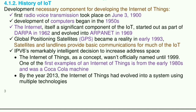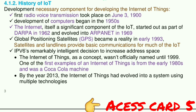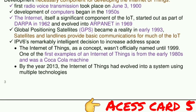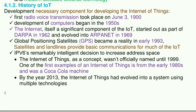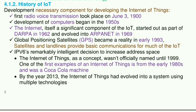History of IoT: Necessary components for developing the Internet of Things. The first radio voice transmission took place on June 3, 1900. Development of computers began in the 1950s. The internet, itself a significant component of IoT, started out as part of DARPA in 1962 and evolved into ARPANET in 1969. Global Positioning Satellites, GPS, became a reality in early 1993. Satellites and landlines provide basic communications for much of IoT. IPv6's decision to increase address space was remarkably intelligent. The Internet of Things, as a concept, wasn't officially named until 1999.